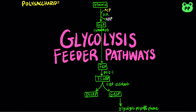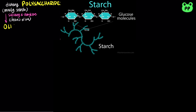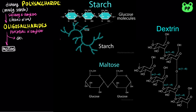Dietary polysaccharides such as starch and glycogen are first hydrolyzed by salivary alpha-amylase, which cleaves alpha-1 to 4 glycosidic linkages, producing oligosaccharides, which are further hydrolyzed by pancreatic alpha-amylase, producing maltose and dextrins. Dextrins are fragments of amylopectin containing alpha-1 to 6 branch points, and are degraded by dextrinase into glucose molecules.